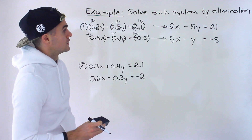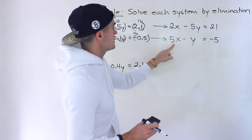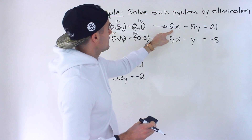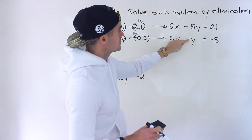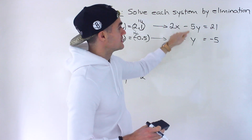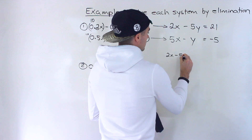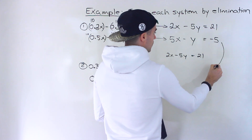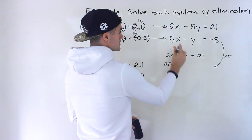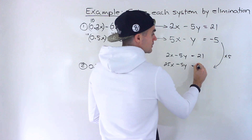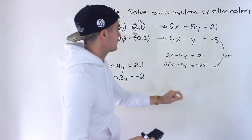We can pick to eliminate either the x's or the y's. To get rid of the x's, we'd need to make both terms be 10x — multiply one by 5 and the other by 2. But notice we can just multiply the second equation by 5 to match the y terms. So I'm going to rewrite the first equation and then multiply everything in the second equation by 5, giving us 25x minus 5y equals negative 25.